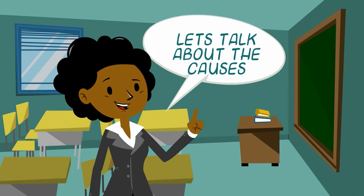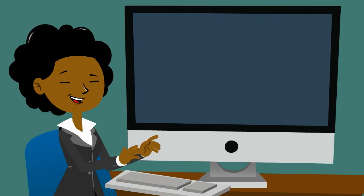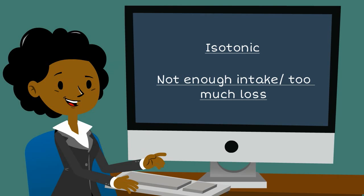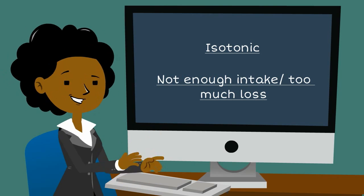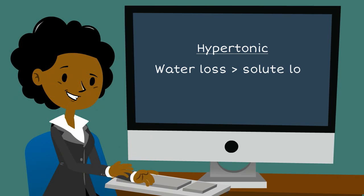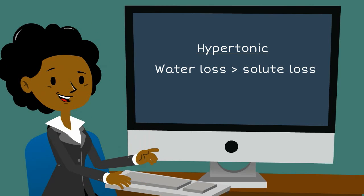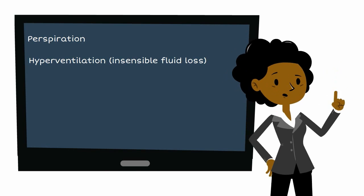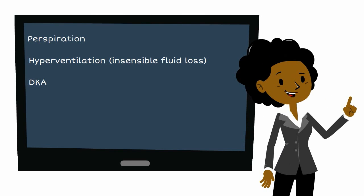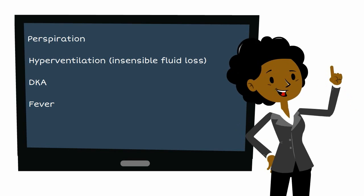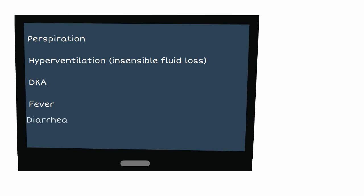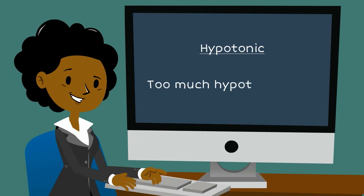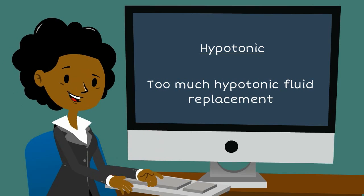Some causes of fluid volume deficits: isotonic dehydration, where fluids and electrolytes are lost in the same proportion, is usually caused by inadequate intake of fluids and solutes. Hypertonic dehydration, where water is lost more than solutes, is caused by anything that increases fluid loss — like excessive perspiration, hyperventilation (insensible fluid loss), ketoacidosis, prolonged fevers, or diarrhea. Hypotonic dehydration is most often caused by excessive fluid replacement — giving the patient too much hypotonic fluids.